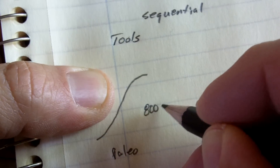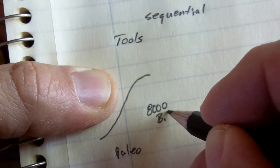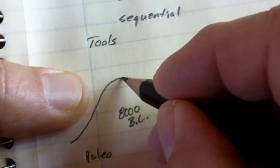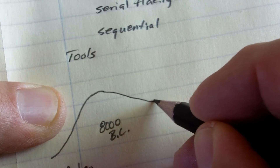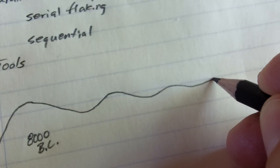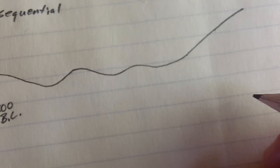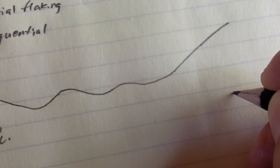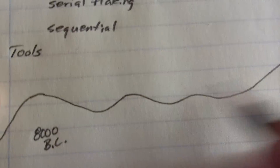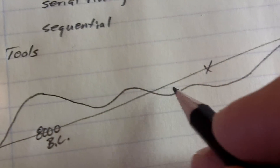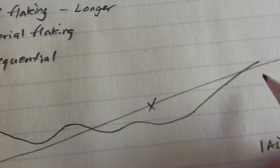Around 8000 BC it kind of went down a little bit after that. There are other peaks and valleys, and the point that I'm showing you is at a time where the refinement starts to go up — around 1 AD. The best ones of this time period are more refined than the best ones of the earlier time period. I'm talking about the best examples of each time period increasing in refinement over time.